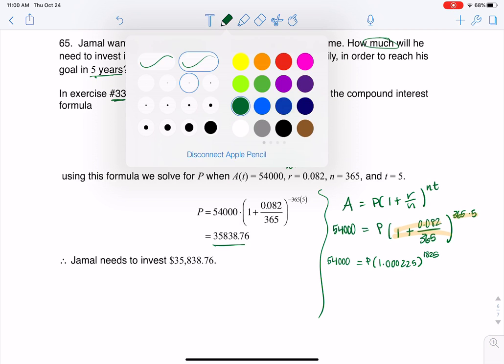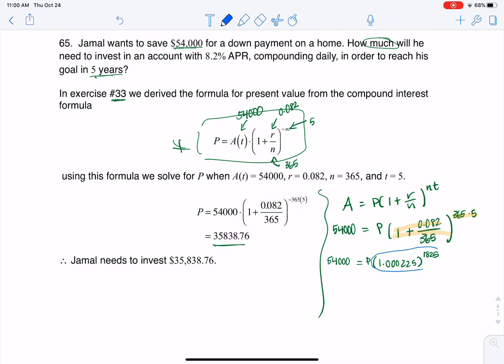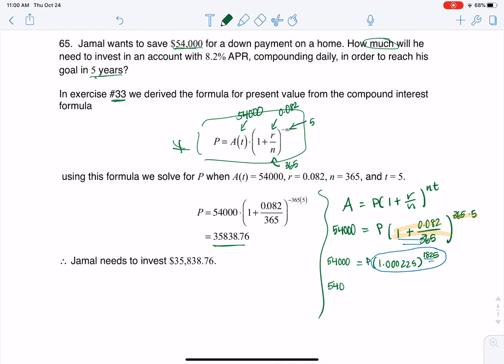So the next thing I'm going to do is I'm going to crunch this number on my calculator. So I'll take that previous answer I got and raise it to the 1,825th power. And when I do that, I'm looking at 54,000 is going to equal P times. This wound up being about 1.507.